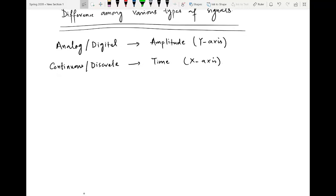First of all, analog and digital differ in amplitude. If that amplitude or y-axis contains infinite values, then this means that the signal is analog. If it can only attain finite values, then this means that the signal is digital.